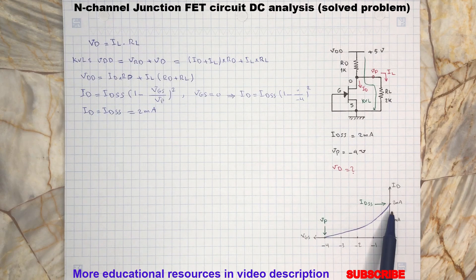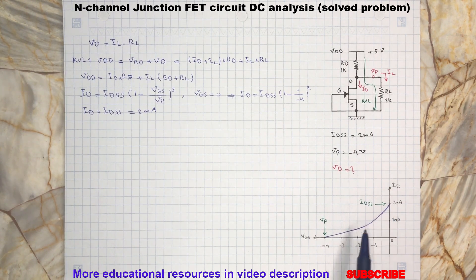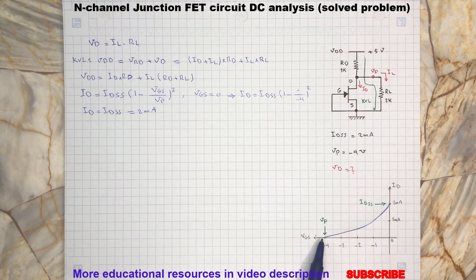IDSS is the saturation current at zero gate-source voltage and is the maximum current that can flow through the JFET from drain to source. VAP is the pinch-off voltage and is the gate-source voltage which makes the drain-source current zero. So let's put known values in the KVL expression.